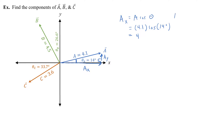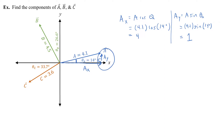For the y component, I would do a times sine of theta — and I should call this theta-a since we have 3 angles — so 4.1 times sine of 14 degrees gives me 0.99, or we can just call that 1. And again my y component points up, so I would make that a positive 1 for my y component. So the x component is 4 and the y component is 1.